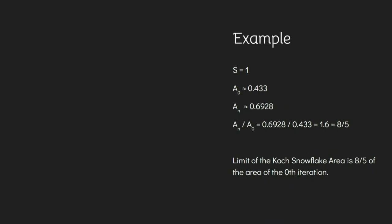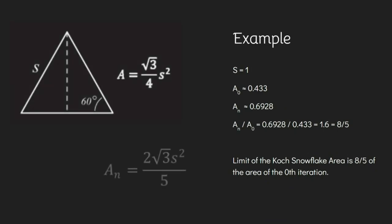This is demonstrated in the example shown on the screen where s equals 1. Using the two equations on the screen, we can determine the areas. The area of the 0th iteration is around 0.433, and the area of the nth iteration is limited to 0.6928, confirming that it is limited to 1.6 or 8 fifths of the original area.